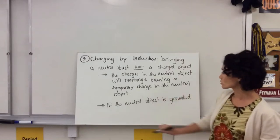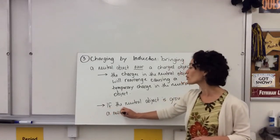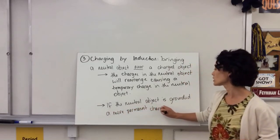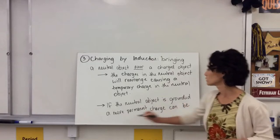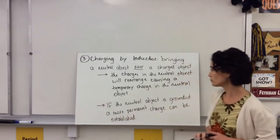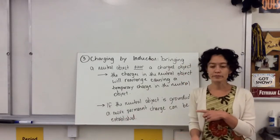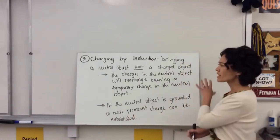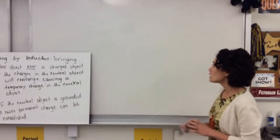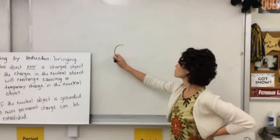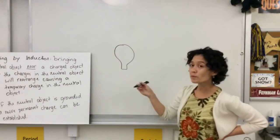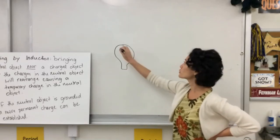If the neutral object is grounded, a more permanent charge can be established. Let's go through an example of charging by induction because this seems rather abstract. Let's say you have a balloon, and it's helpful to draw this. Let's say you charge up the balloon by friction — you rub it on your hair — and it ends up having a large negative charge.